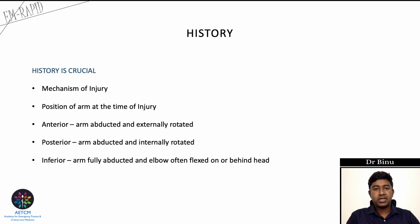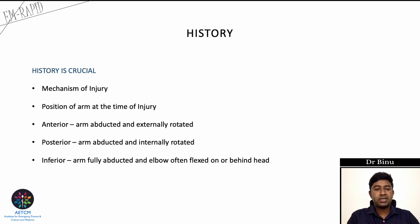History is very crucial in shoulder dislocation — asking about the mechanism of injury and the position of the arm at the time of injury gives clues about the type. In anterior dislocation the arm is abducted and externally rotated; in posterior dislocation the arm is adducted and internally rotated; in inferior dislocation the arm is fully abducted and the elbow often appears flexed on or behind the head.